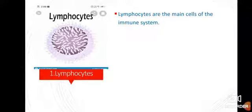Granulocyte cells have granules in their cytoplasm. Agranulocyte cells have clear cytoplasm — no granules present. Agranulocytes are of two types: lymphocytes and monocytes. Lymphocytes are white blood cells because their cytoplasm is clear.